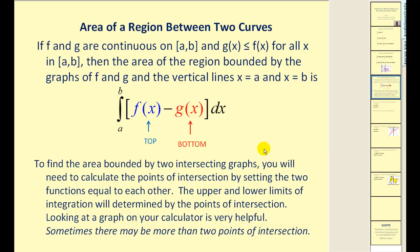So to find the area bounded by two intersecting graphs, we need to calculate the points of intersection by looking at the graph or by setting the two functions equal to each other. The upper and lower limits of integration will be determined by the points of intersection. Let's give it a try.